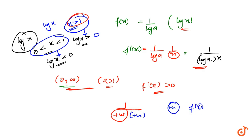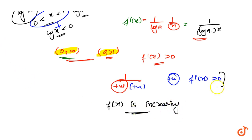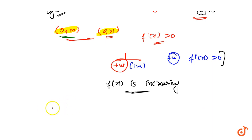So f'(x) > 0 for the condition that a is greater than 1. Therefore f(x) is increasing in the interval (0, ∞) when a > 1. Now let's check the other condition.